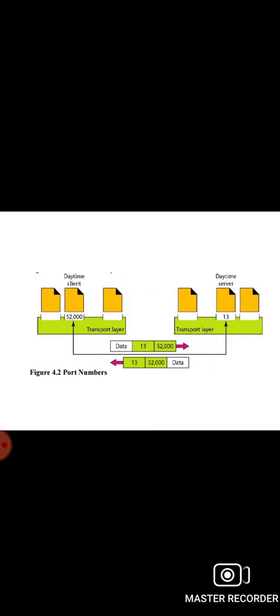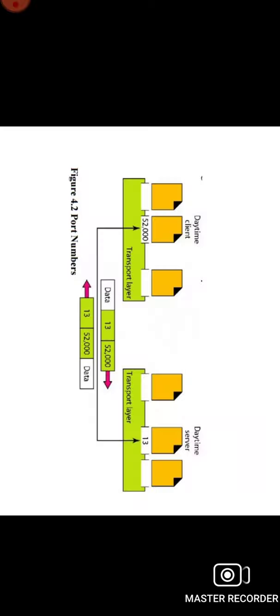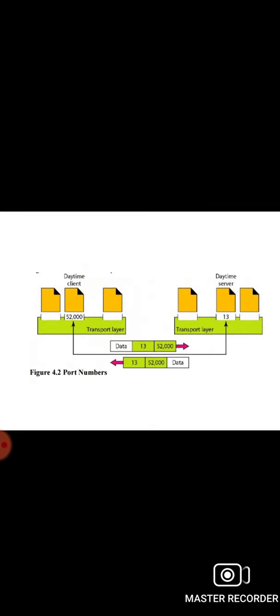The IP address and port number play different roles in selecting the final destination of the data. The destination IP address defines the host among the different hosts in the world. After the host has been selected, the port number defines one of the processes on that particular host. Now we'll see the IANA ranges — the Internet Assigned Numbers Authority has divided port numbers into three ranges: well-known, registered, and dynamic.